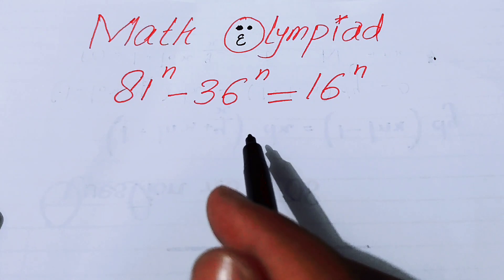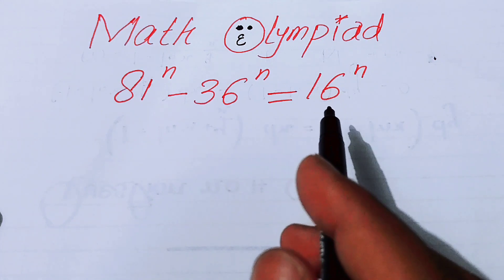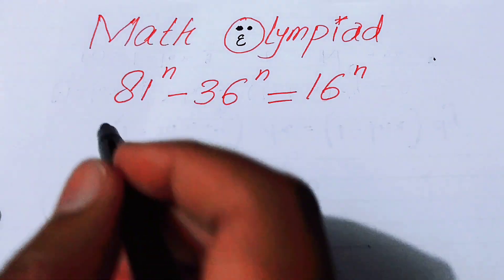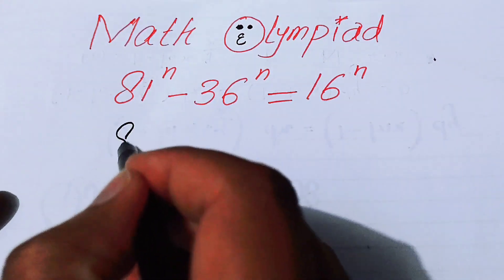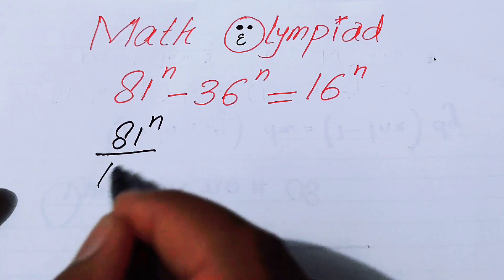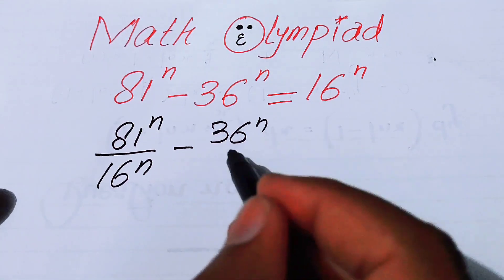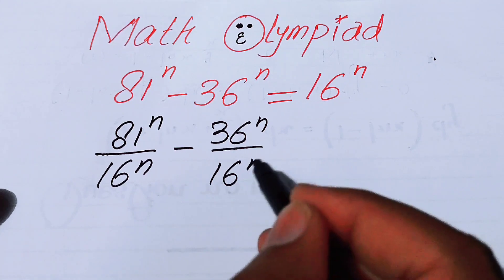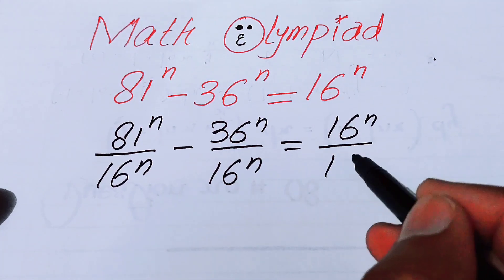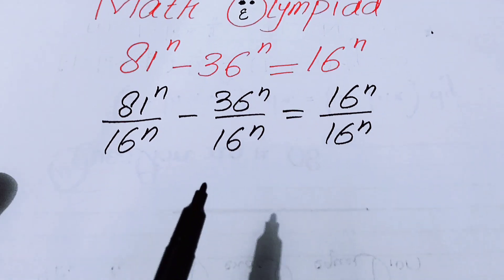The very first thing we are going to do is divide both sides by 16 to the power of n, so that this expression will be rewritten as 81^n over 16^n minus 36^n over 16^n is equal to 16^n over 16^n.